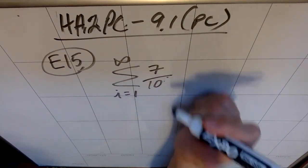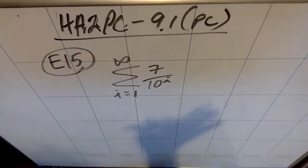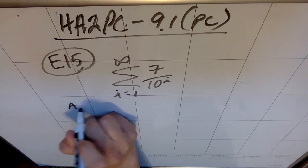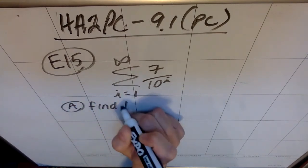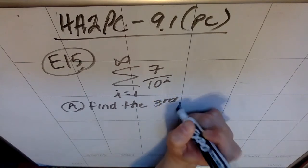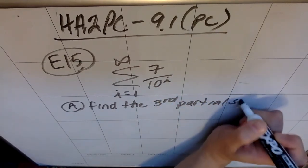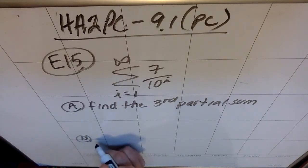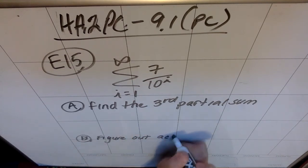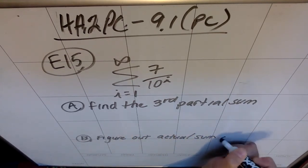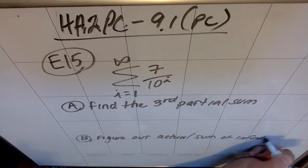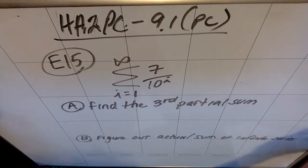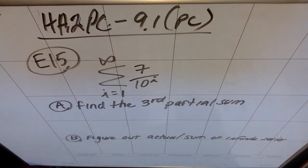We can actually talk about how to find this infinite sum with some logic. So we're going to do two different things. Part a, we're going to find the third partial sum, meaning the first three terms. And then we're going to figure out the actual sum of the infinite series. And we're going to figure that out with some logic because until we get to 9.3, you don't technically have the math to figure this out, but I think you can figure it out by visual inspection, which as always just means using your eyeballs.